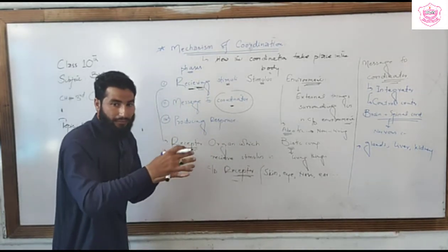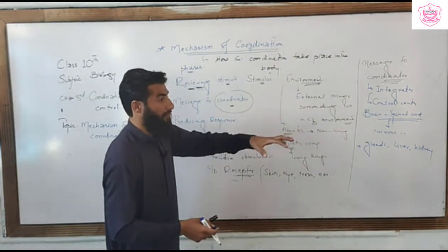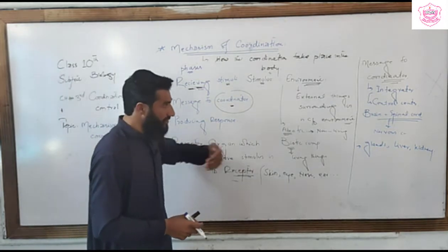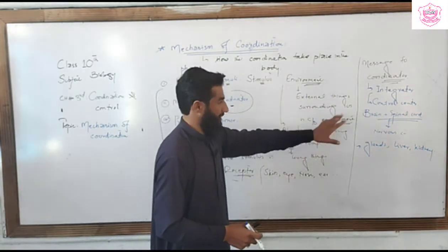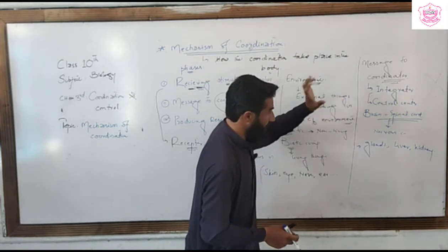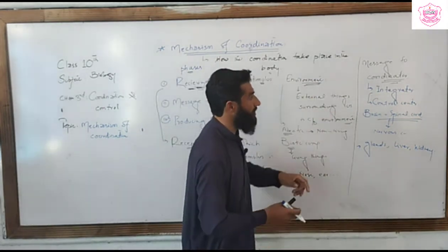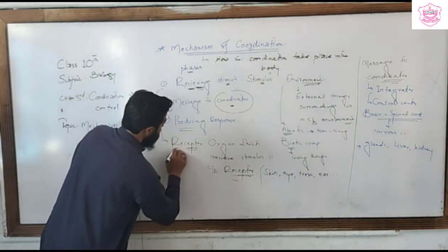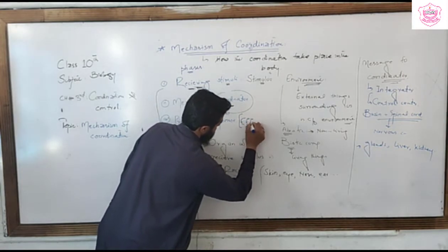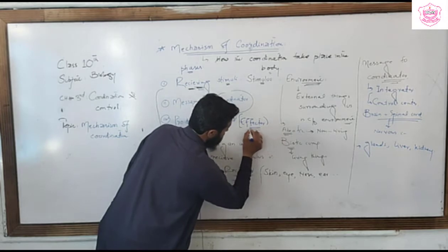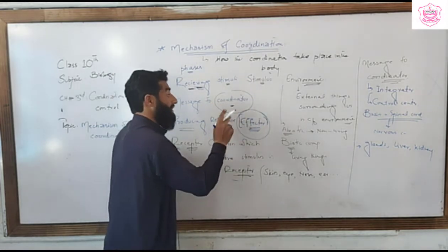The coordinator receives and analyzes the signal and produces a reaction to the stimulus. In nervous coordination, the control center is your brain and spinal cord. In chemical coordination, there are different glands. Based on the brain's decision, a response is produced, which is carried out by muscles and glands. Muscles and glands are called effectors — the organs that express or carry out the response.